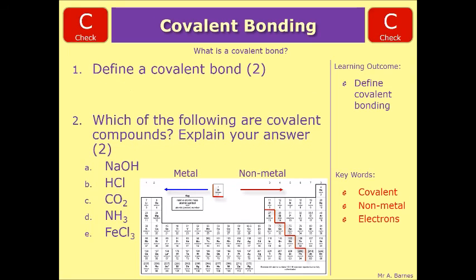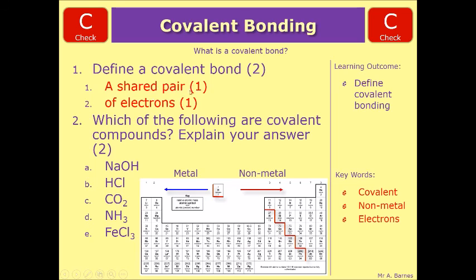So first things first, the definition of a covalent bond. Two things we're looking for: it's a shared pair — a shared pair of electrons. You must have that pairing. If you just say shared electrons, you'd only get one mark. The shared pair is what gets you the second mark.